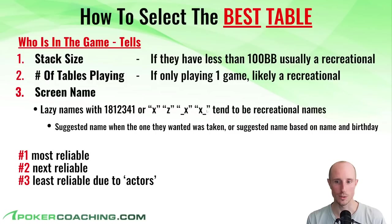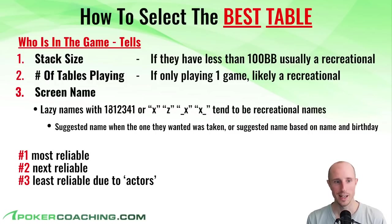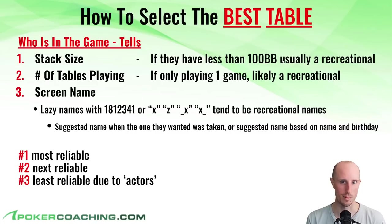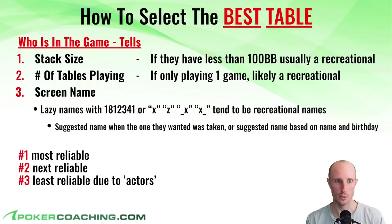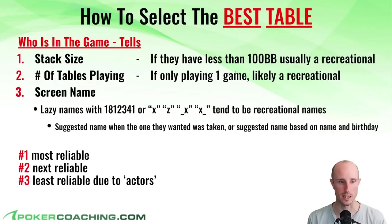If someone has a recreational screen name but is playing four tables, they're probably a regular. If someone has a recreational screen name and is playing with 52.4 big blinds, they're probably recreational. You can combine the three tells to figure out who's a reg and who's recreational: stack size is the most telling, number of tables they're playing is second most telling, and screen name is third.